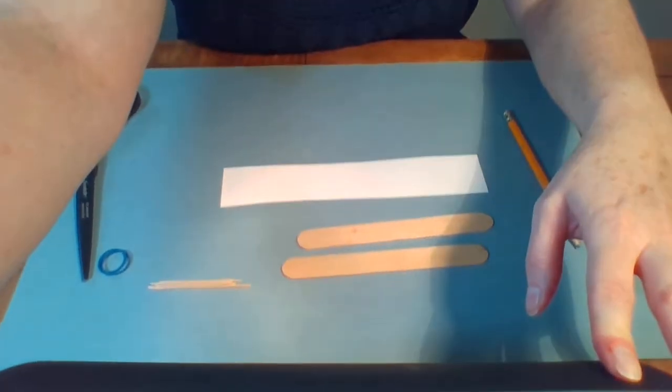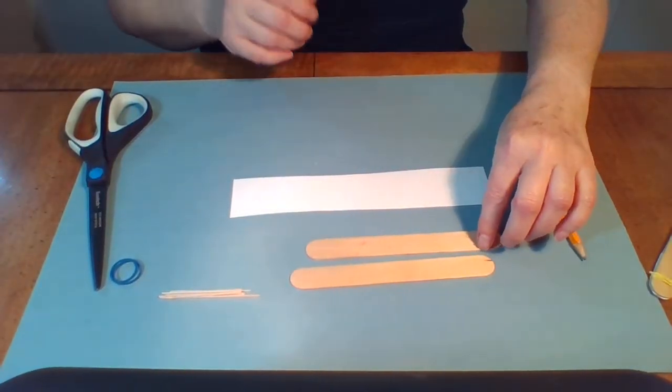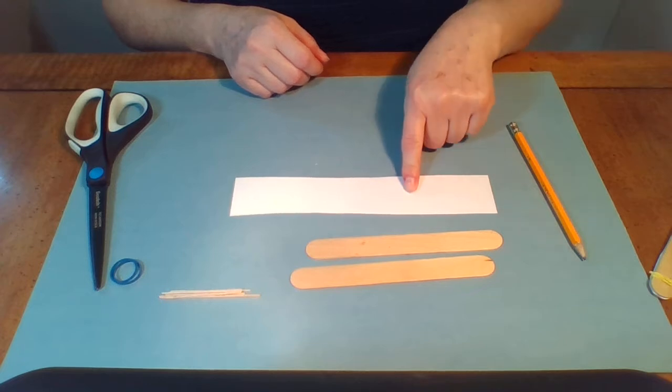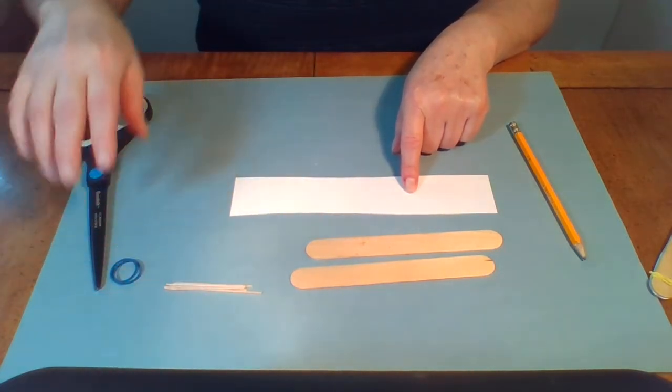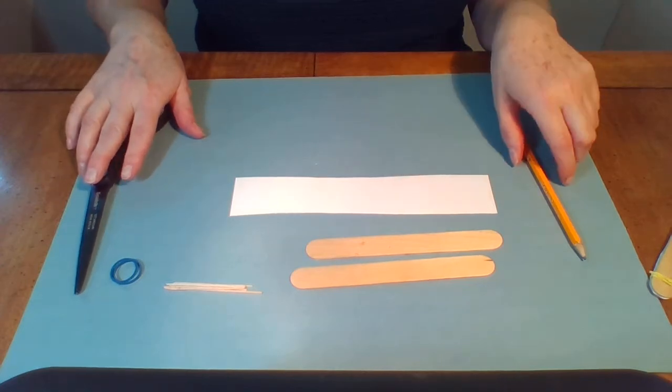You just need a couple of popsicle sticks. I'm using the fat ones, a piece of paper about the same size as the popsicle sticks, some toothpicks, some rubber bands, a pair of scissors, and a pencil.